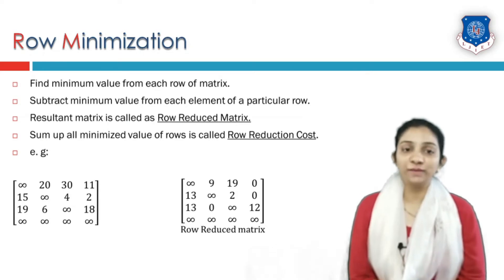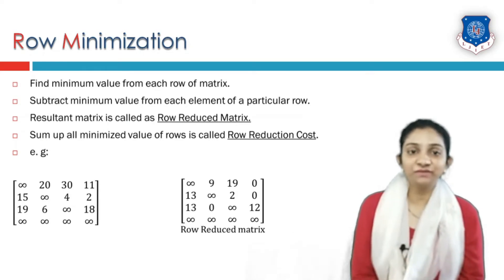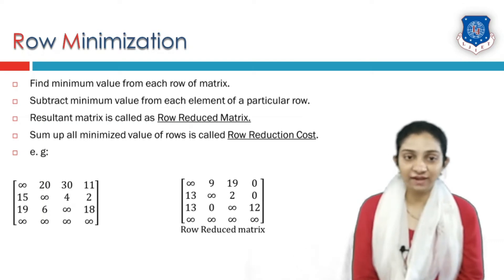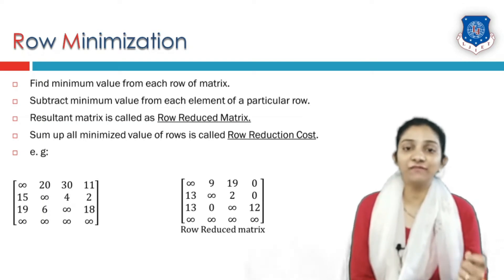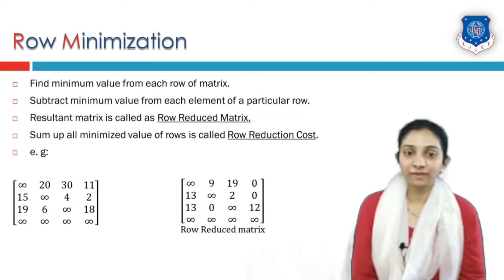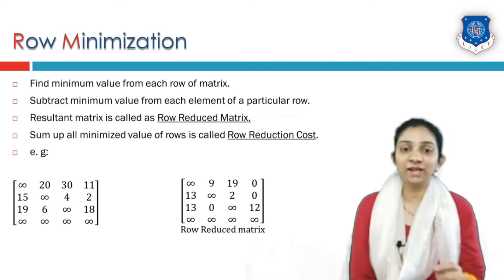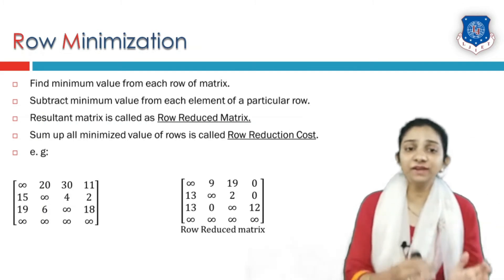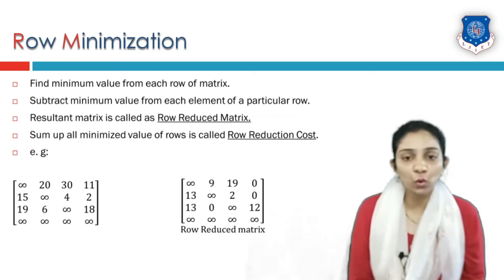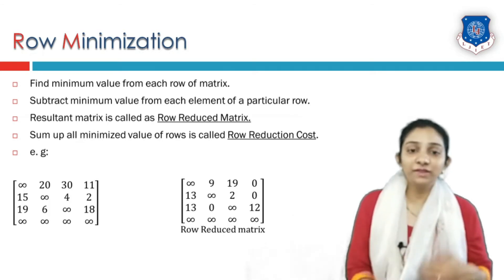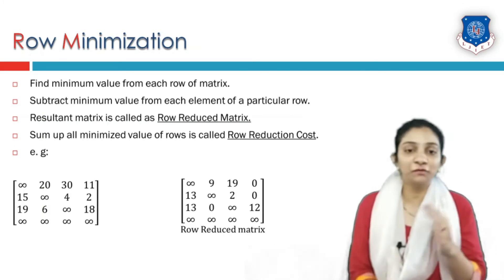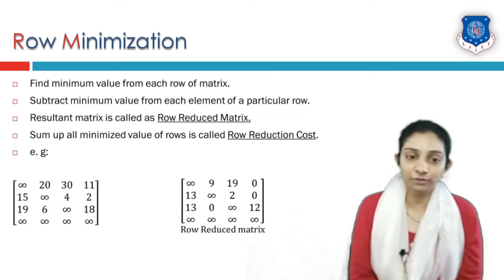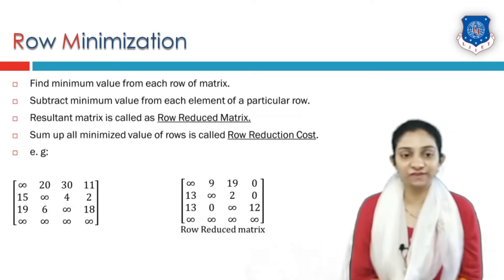Let us see what the row minimization technique is. For row minimization we must have a matrix as input. The very first step is to find the minimum value from each row of the matrix and subtract that minimum value from every element in that particular row. The resultant matrix obtained is called the row reduced matrix, and the sum of all minimum values found from each row is called the row reduction cost. For example, a 4 by 4 matrix is given.